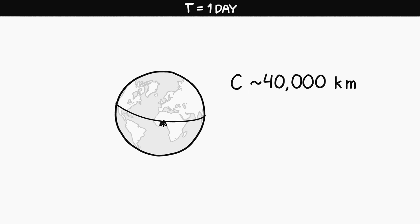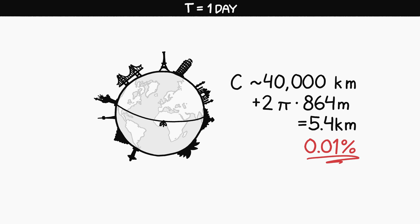After one day, the 40,000 kilometer circumference of the earth would increase by 2 pi times 864 meters, or 5.4 kilometers, which is about 0.01 percent. And that'd be handled easily by virtually all structures. Concrete expands and contracts by more than that every day.